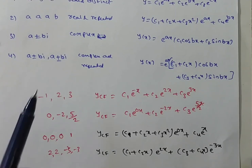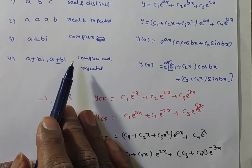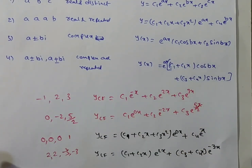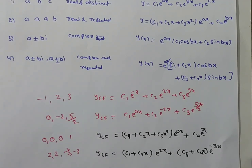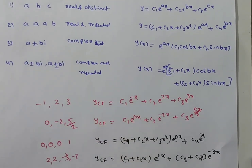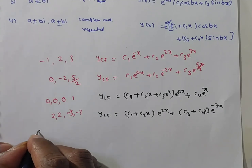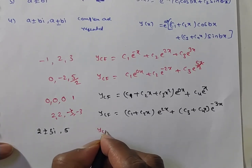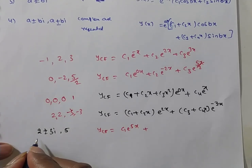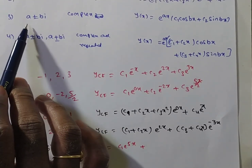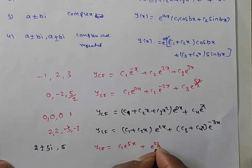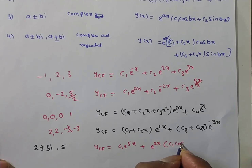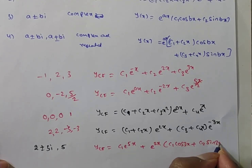For complex roots a ± bi, the complementary function is eᵃˣ(c₁ cos bx + c₂ sin bx). For example, if roots are 2 ± 3i and 5: CF = c₁e⁵ˣ + e²ˣ(c₂ cos 3x + c₃ sin 3x). Here a = 2, b = 3 from the complex root 2 ± 3i.